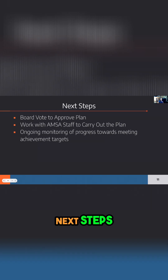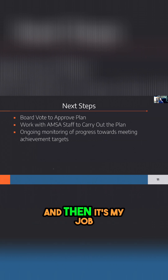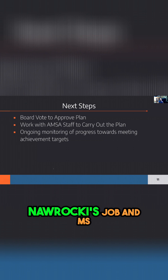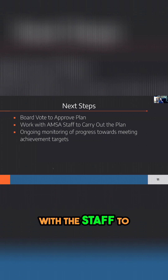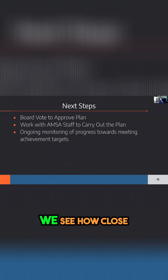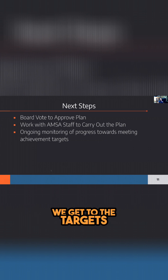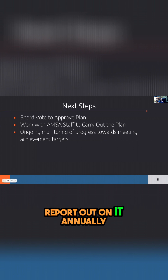Next steps: we need the board to vote to approve this plan. Then it's my job, Mr. Naraki's job, and Ms. Sensi's job to work with the staff to carry out the plan. Then we monitor and see how close we get to the targets, and we have to report out on it annually.